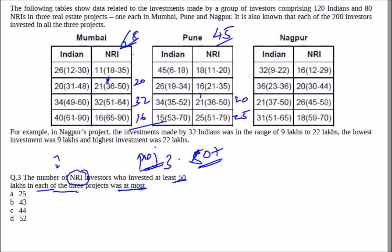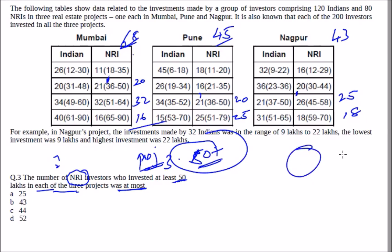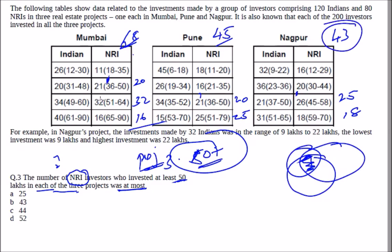In Nagpur, one person at the lower threshold, 25 from one band, 18 from another — giving 43 people. Now to maximize the number investing ≥50 in all three, we use Venn diagram logic. The binding constraint is the smallest city count, which is 43. So the maximum number of NRI investors with at least 50 lakhs in each of the three projects is 43. Option B is the correct choice.